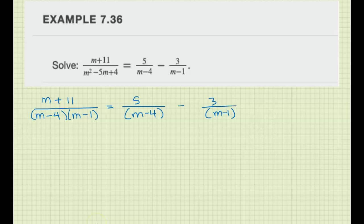Let's find a common denominator here. So this gets multiplied by m minus 1, and this gets multiplied by m minus 4. Don't forget the top, otherwise everything is ruined.